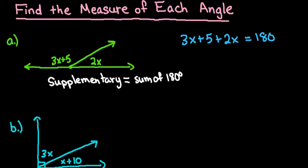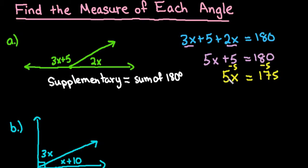So now all we have to do is solve the simple equation. We would combine our like terms, so 3x plus 2x gives us 5x, plus 5 equals 180, and now what we want to do is get x by itself. So we're going to subtract 5 from both sides. So when I do that I get 175. And then I need to divide both sides by 5 in order to find the value of x.